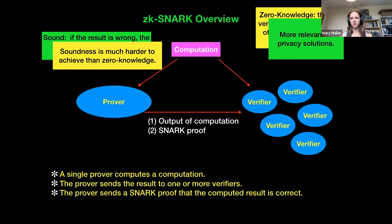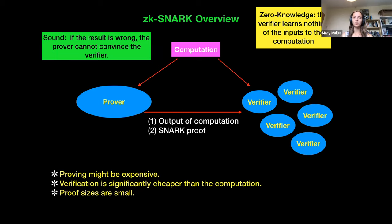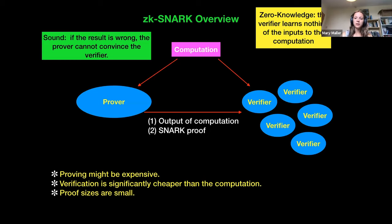Soundness is also the harder of the two properties to achieve in general. With a SNARK, generating the proof that your change of state has been done correctly is very expensive — so expensive that it might put people off doing it. But verification is very cheap, significantly cheaper than running the computation itself, and proof sizes are also very small, so you're not having to store lots of data.